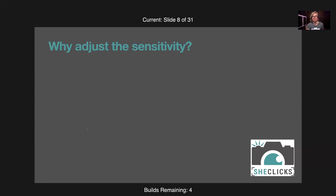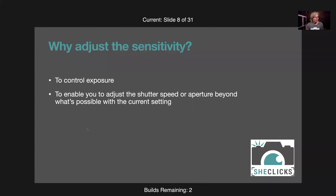Why do we adjust the sensitivity of the camera? First, to control exposure — if you want your image to be brighter or darker you may need to adjust sensitivity. It also enables you to adjust the shutter speed or aperture beyond what's possible with the current setting. If you have ISO 100 set and can't get the shutter speed as fast as you want, you could set ISO 200 or higher to get a faster shutter speed.